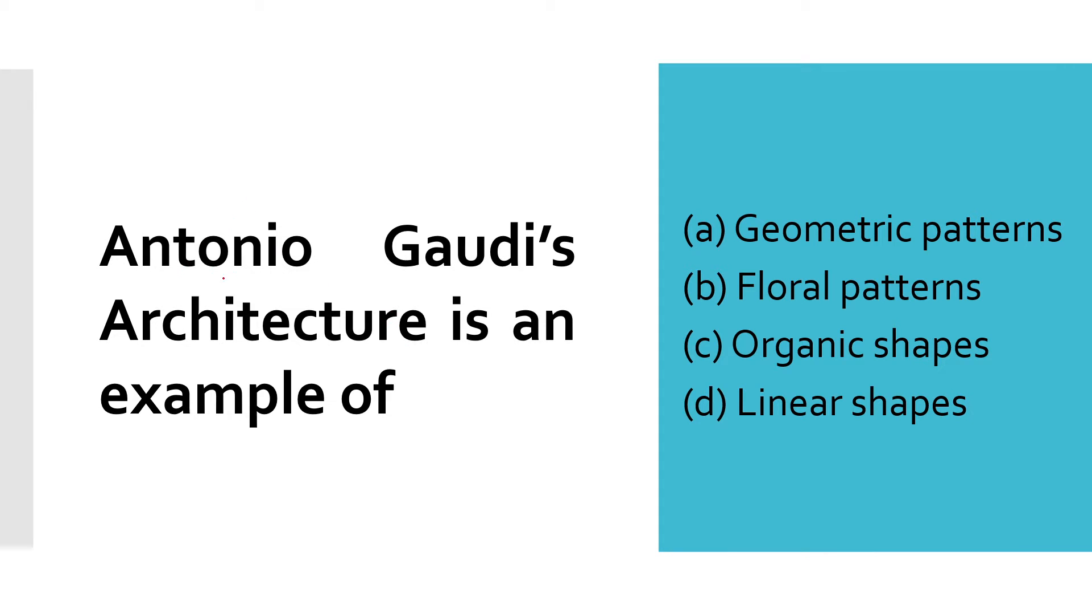First question is: Anthony Gaudi's architecture is an example of geometric patterns, floral patterns, organic shapes, or linear shapes? The correct answer is organic shapes.